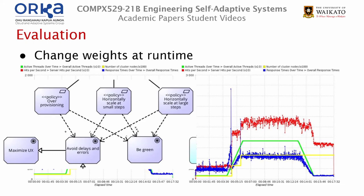One thing I will note is I think there's a typo in the requirements model. On the arrow from horizontally scale at large steps down to avoid delays and errors, there's a single minus. I suspect that's supposed to be one or two positives, because in the paper they show that after the automatic model-to-model transformation, the influence it has on that model is much larger than over-provisioning — about an influence of six, while over-provisioning is one and scaling at small steps is around negative two. So I think there's a typo in the requirements model.